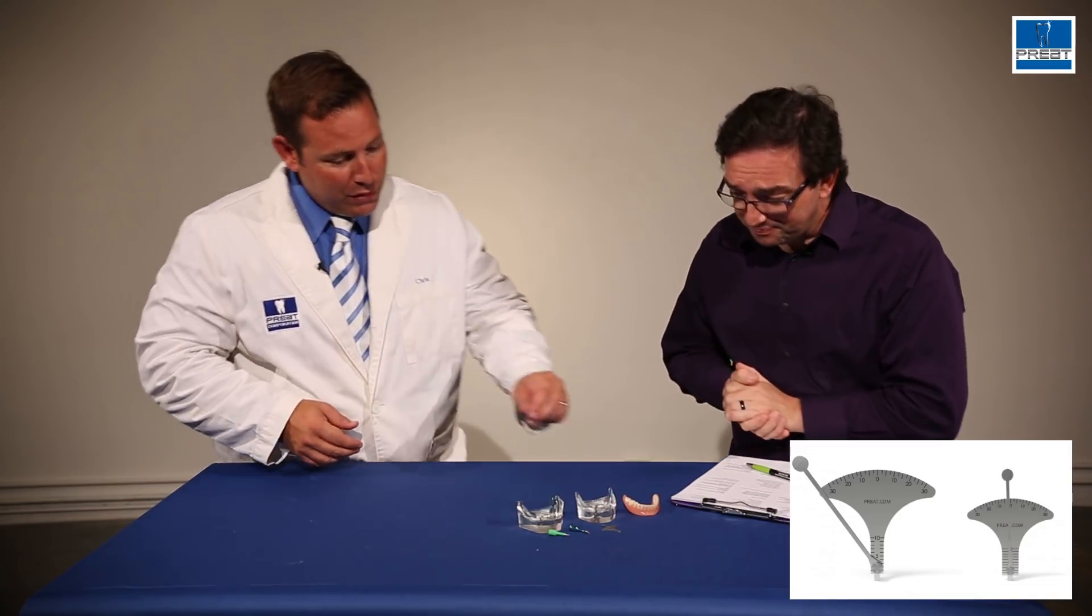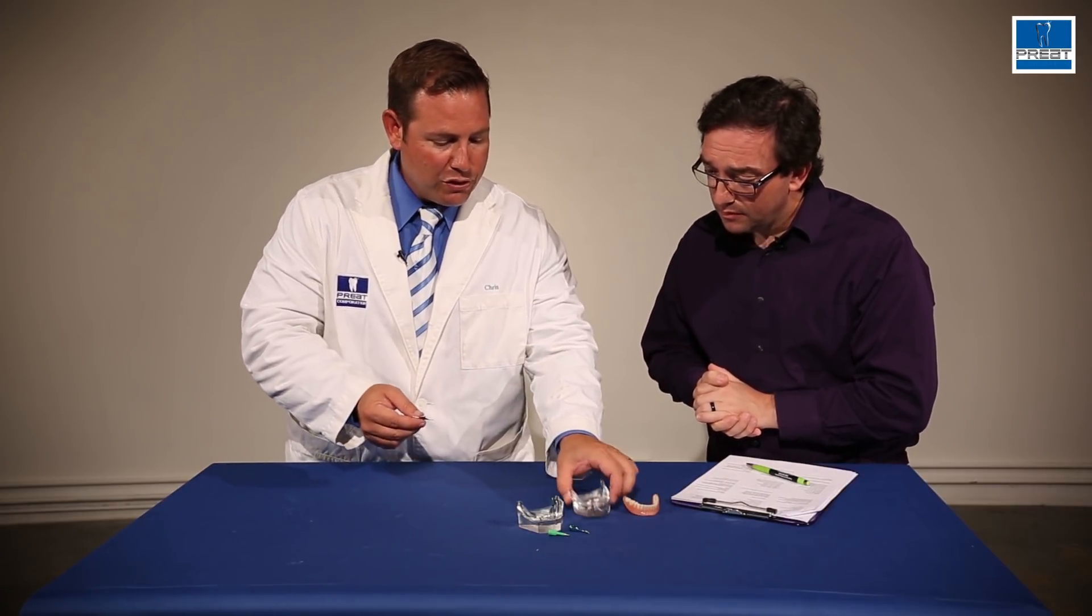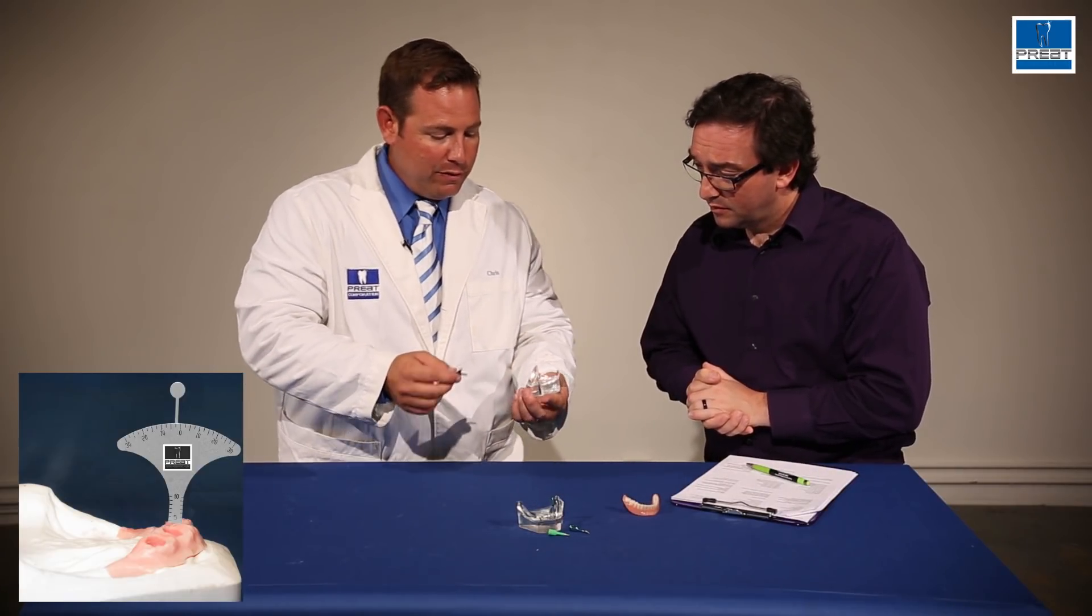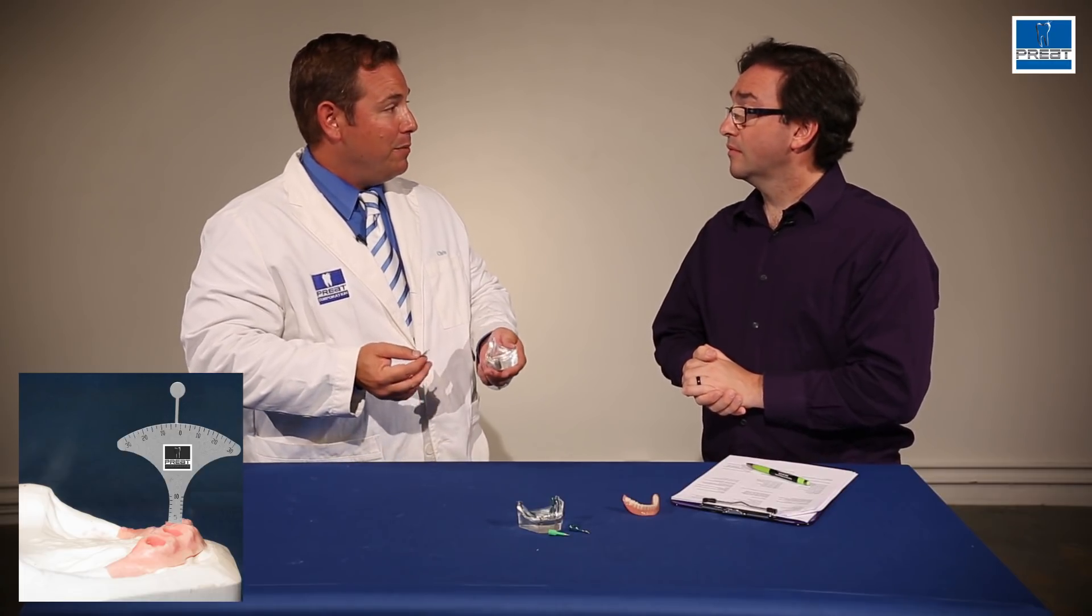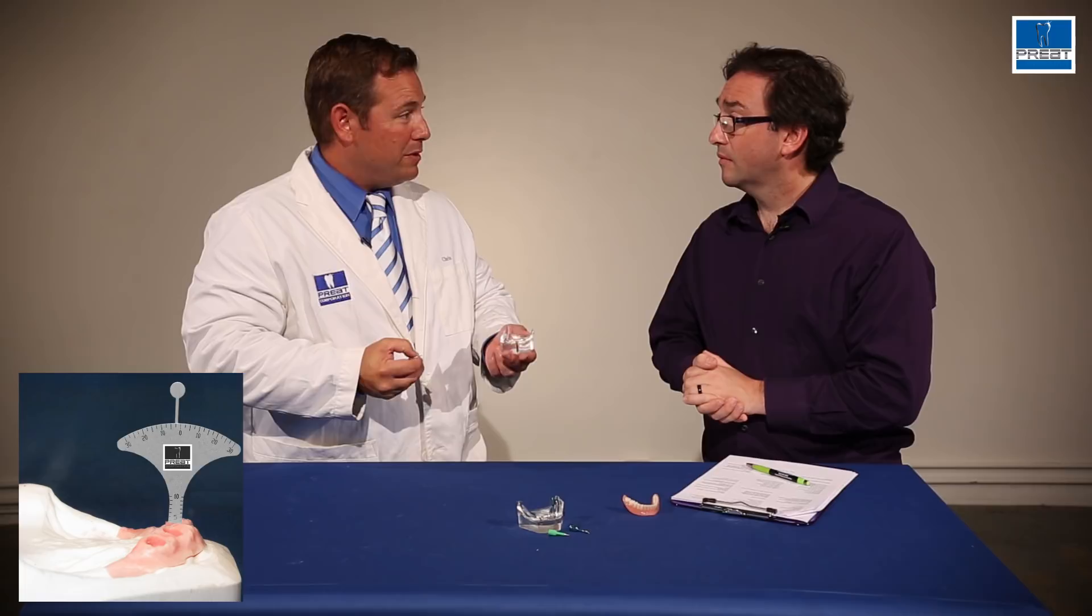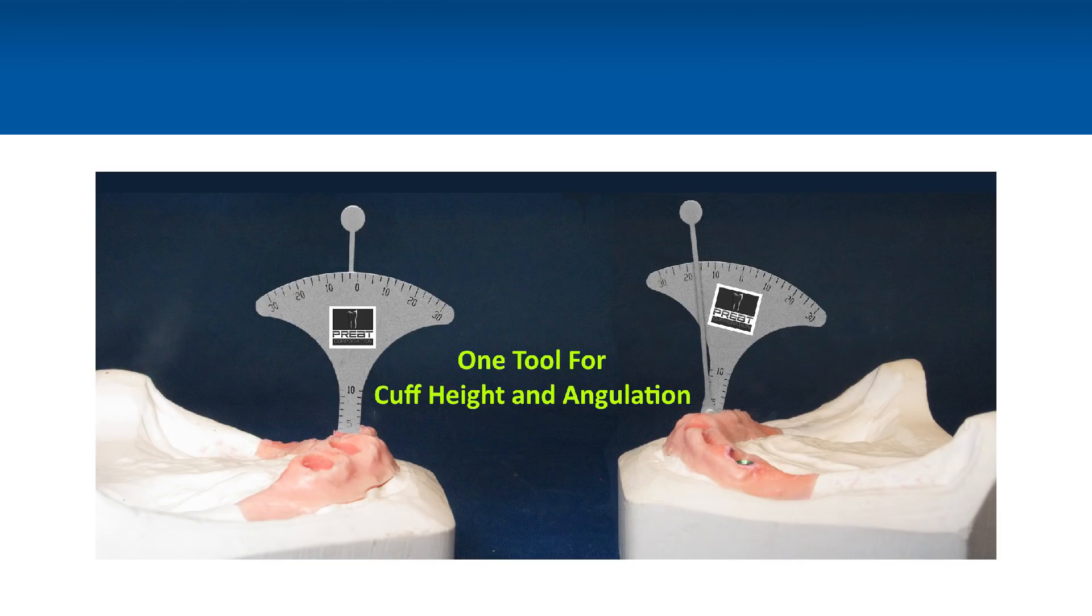So how does it work? It's really simple. The way this is designed, if you want to determine the cuff height, and this could be for a tie base, for a multi-unit, an aesthetic abutment, stock abutment, your preppable abutments, O-rings, balls, you name it. Place the tool down on top of the implant platform, and that is going to provide you with the correct cuff height you need for your abutment.